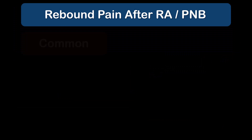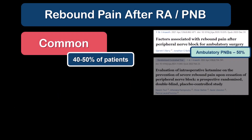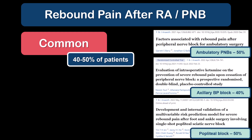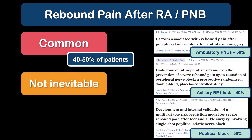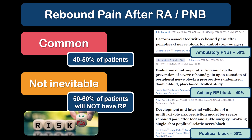Here are some other important things to be aware of regarding rebound pain. It's actually quite common, with a 40-50% incidence observed in multiple studies. At the same time, even though it is common, it isn't inevitable — it occurs in 40-50% of ambulatory peripheral nerve blocks, meaning that 50-60% don't experience rebound pain. The logical question then is: what predicts whether or not someone will experience rebound pain, and who should we be worrying about?